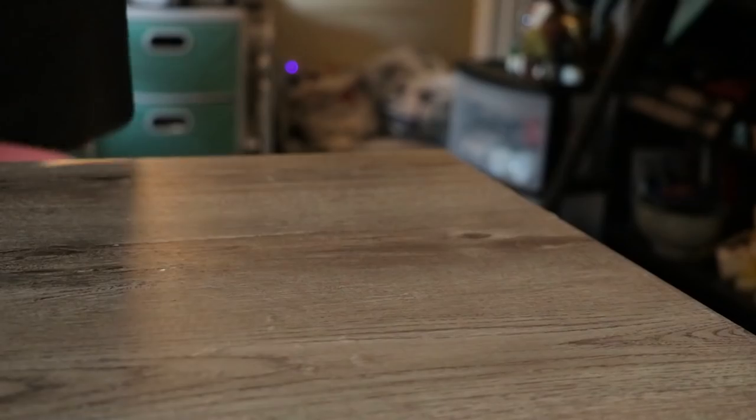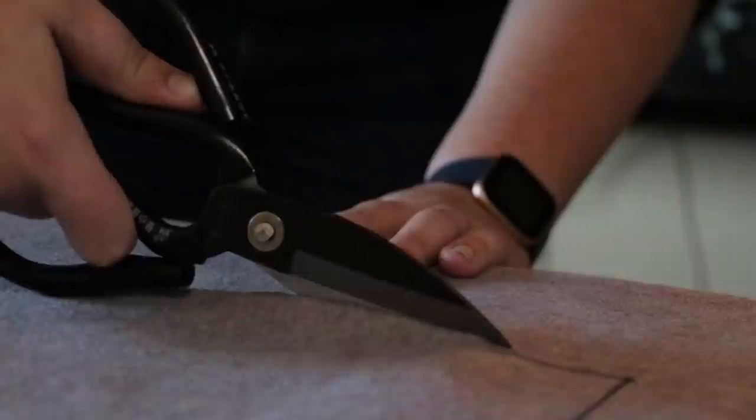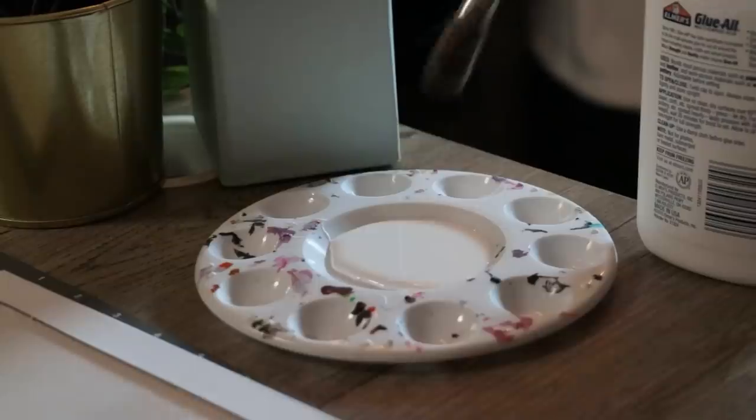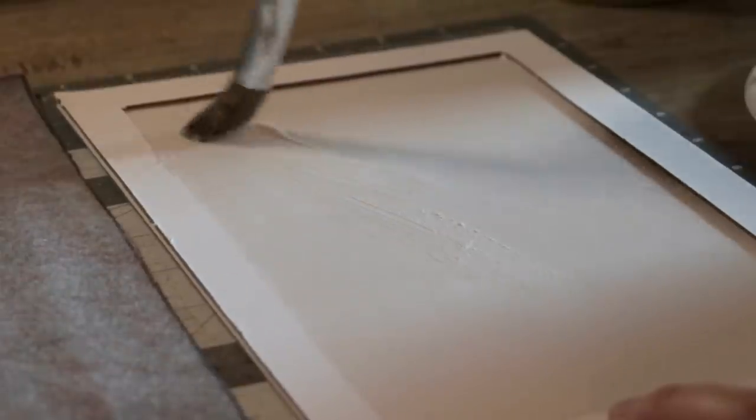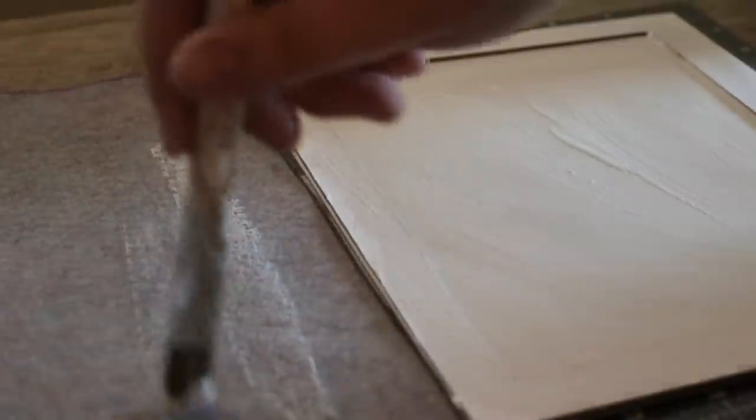And now we have the front and back covers of the book. And yes, I know it looks ugly right now, which is why we are going to add fake leather fabric, which I've been using for the last five of my projects because I bought way too much of it and just need to use all of it. To attach it to the cover, I just slather both sides in glue.